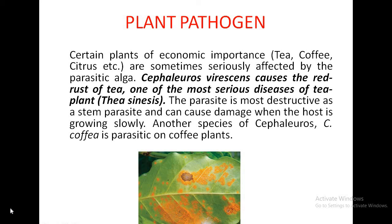Finally, algae can act as pathogens. Cephaleuros virescens, a green alga, causes red rust of tea in the tea plant Thea sinensis. Some species like Cephaleuros coffeae are parasitic on coffee plants. These were the both positive and negative impacts of algae in our environment. Thank you.